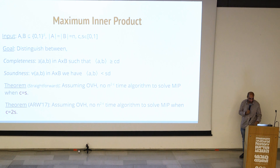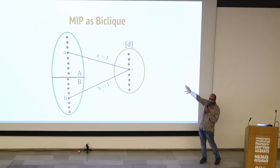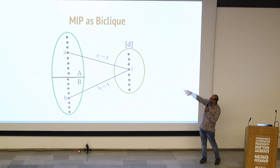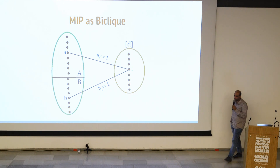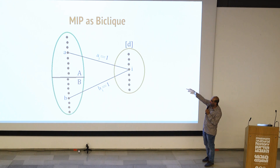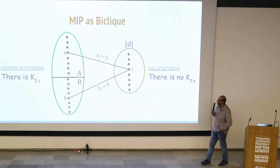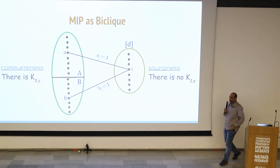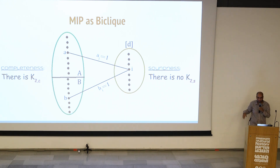I want to rephrase this as a graph problem. Look at the same maximum inner product problem but rewrite it as a bipartite graph, where points in A are vertices on top, points in B are vertices on the bottom, and all coordinates are in the middle. You put an edge between a and coordinate i if the i-th coordinate of a is 1. Phrased this way, you are asking: is there some A and B such that the number of common neighbors is at least C times D? In the completeness case there is a K_{C}-subgraph induced, and in the soundness case there is no K_{S}. This is the bi-clique problem.